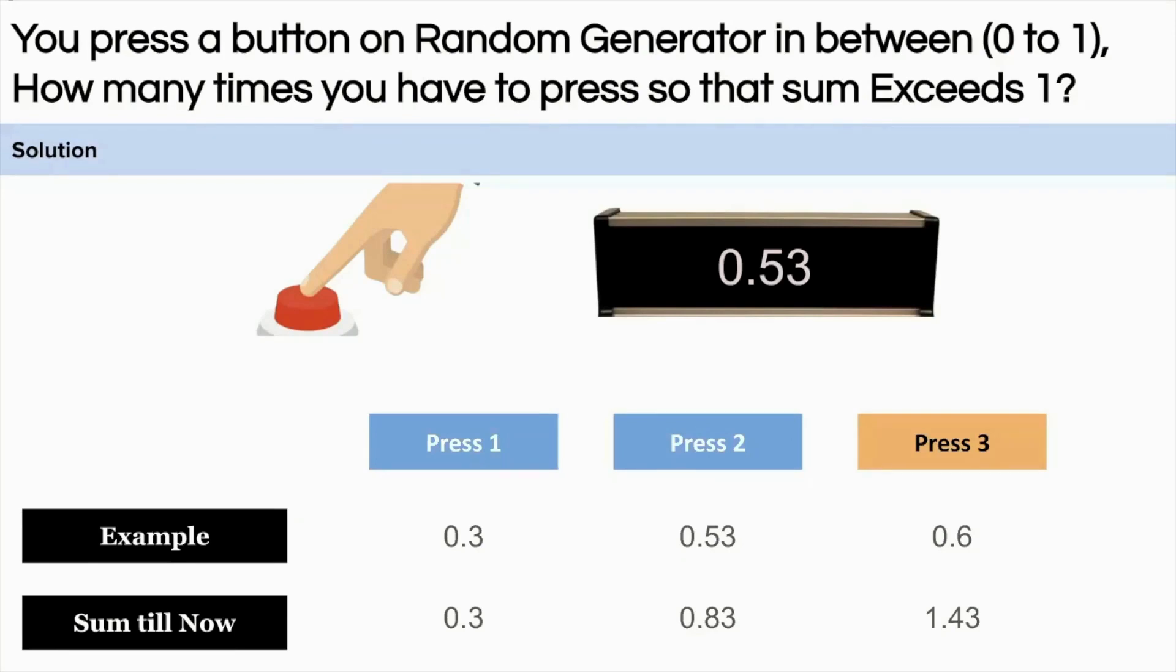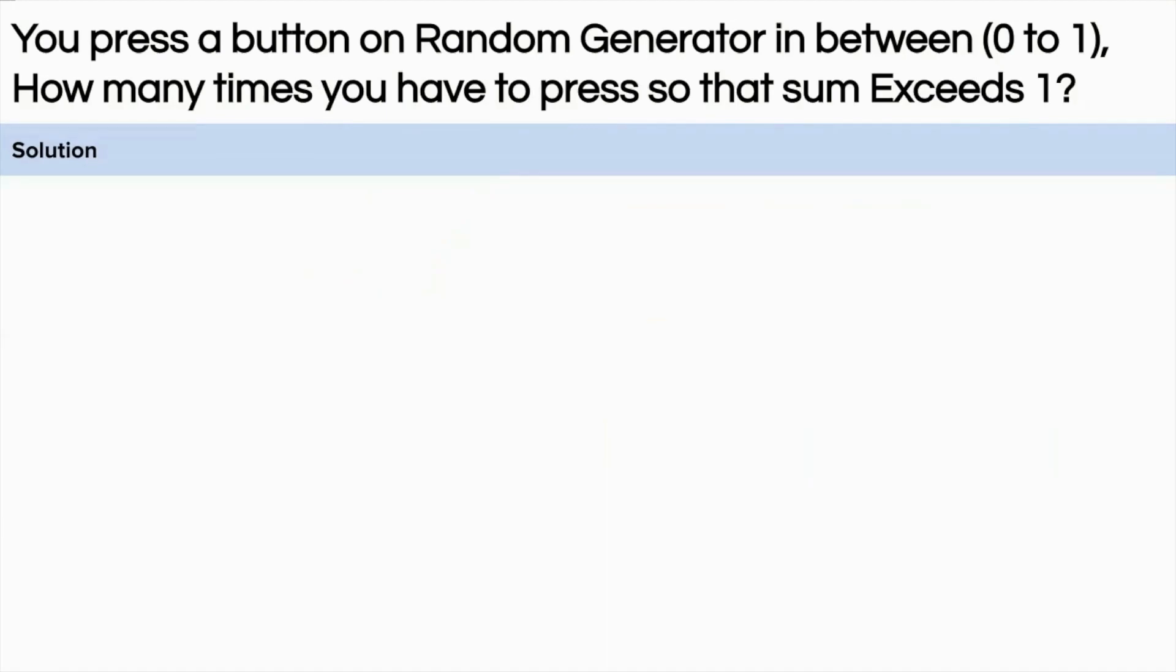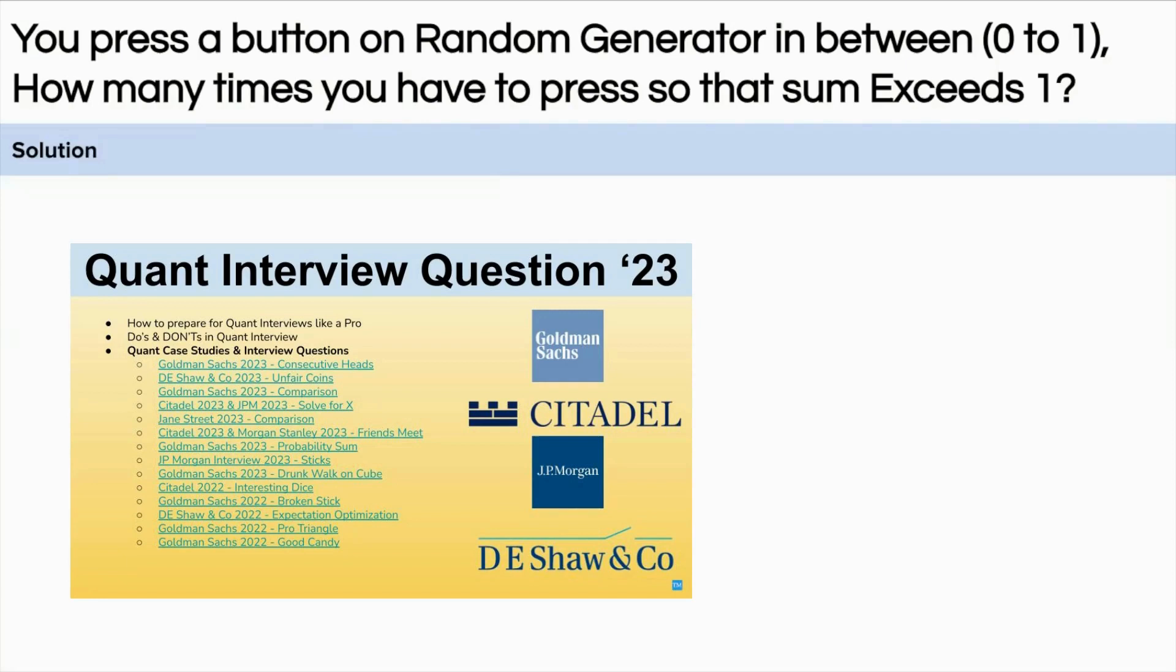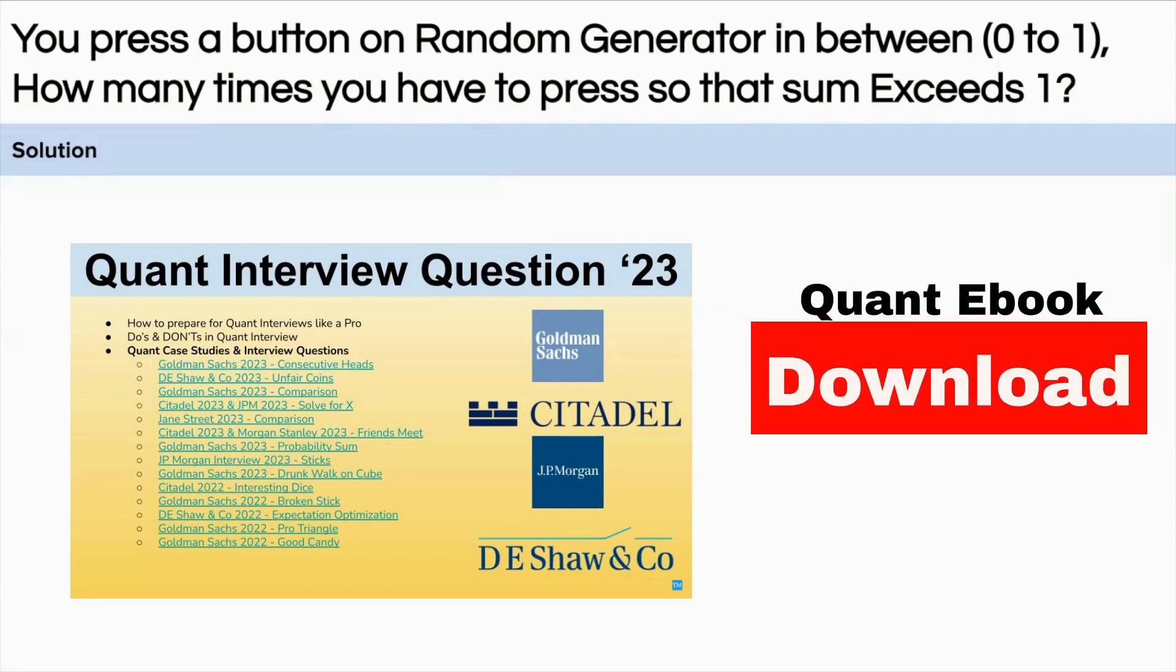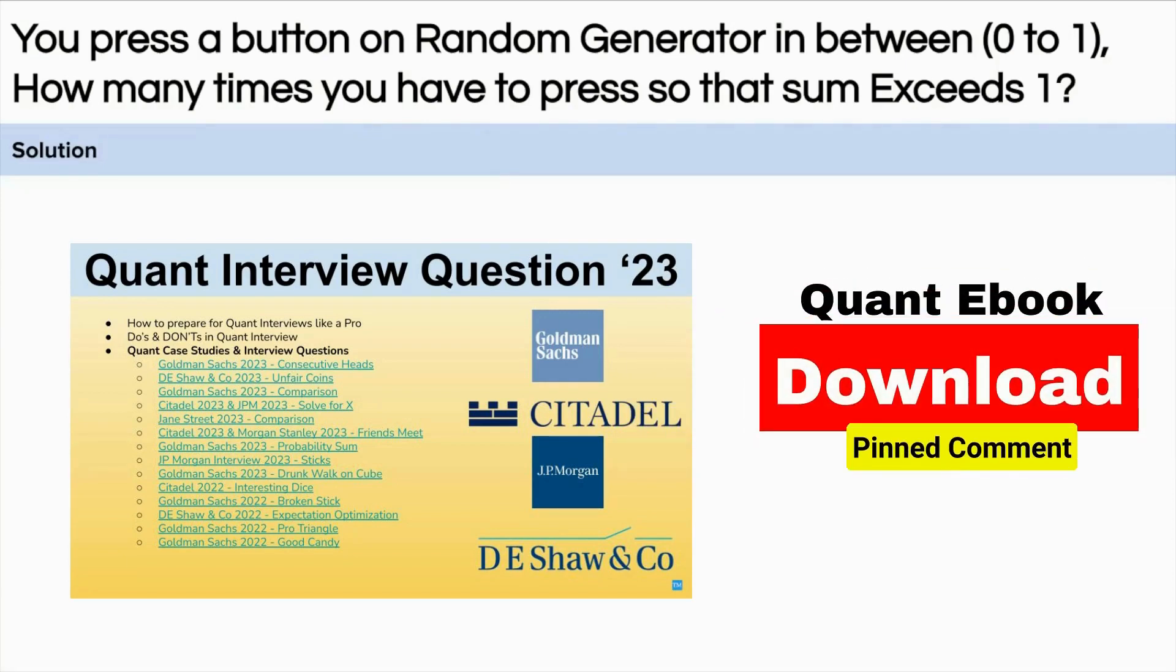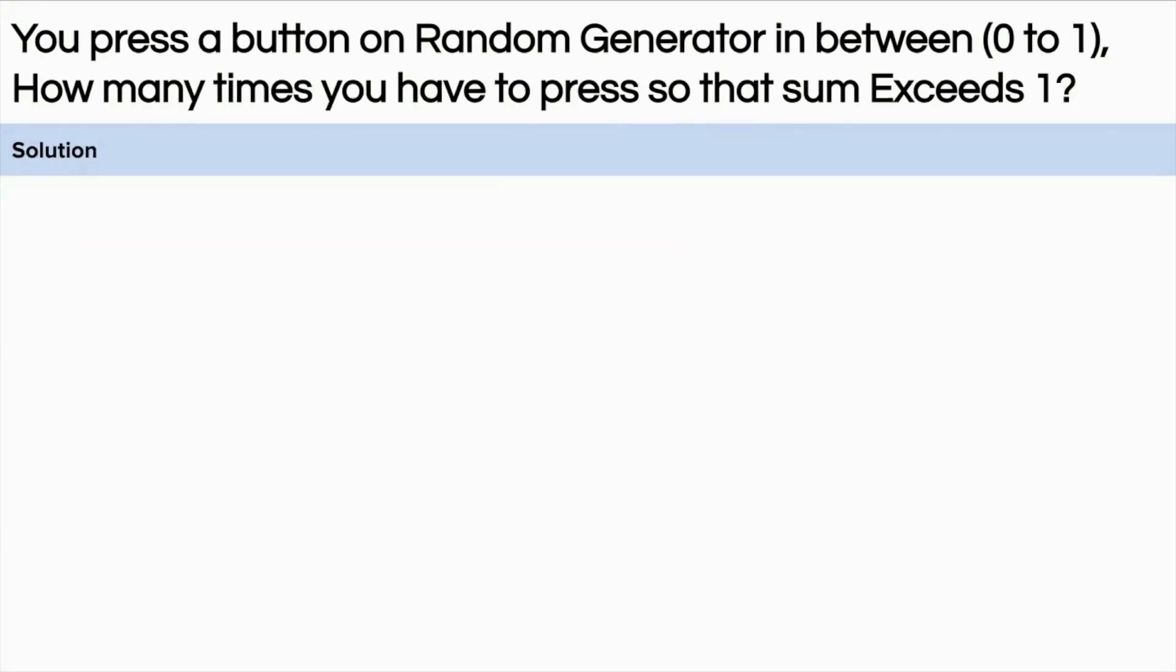So now in the question we need to calculate the expected number of such trials or presses to get the sum greater than 1. Let's see how we can go about this. But before that, find out our ebook on quant interview questions that are being recently asked in top firms. Please find the link in the description box or from the pinned comment. It will be very useful for your upcoming interview preparation.